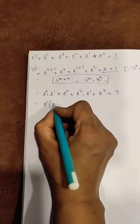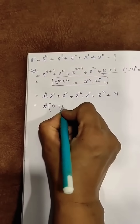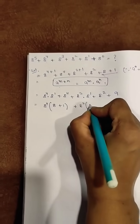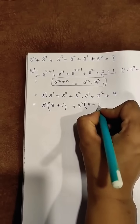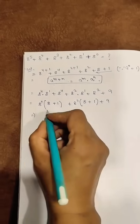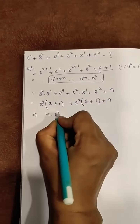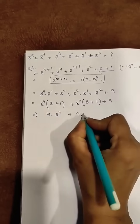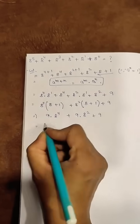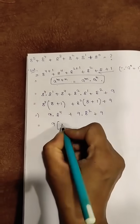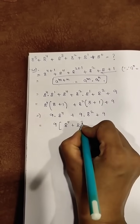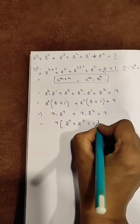Now we can take 8 raised to the power 4 common from here, giving 8 plus 1, and take 8 raised to the power 2 common, giving 8 plus 1, plus 9. This gives 9 into 8 raised to the power 4, plus 9 into 8 raised to the power 2, plus 9. Now again take 9 common: 9 into (8 raised to the power 4 plus 8 raised to the power 2 plus 1).